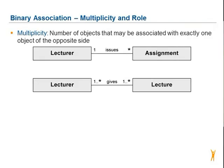In the next step we take a closer look at multiplicity and role. Multiplicity means the number of objects that may be associated with exactly one object of the opposite side. A lecturer issues one or more assignments, but an assignment is issued by exactly one lecturer.